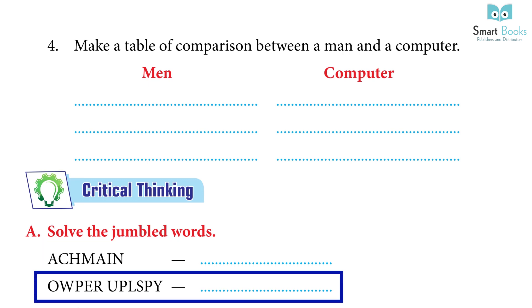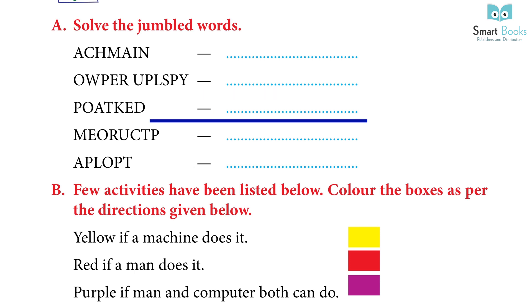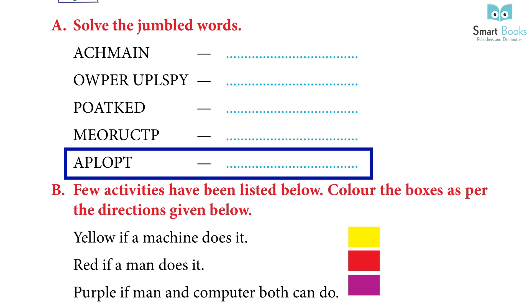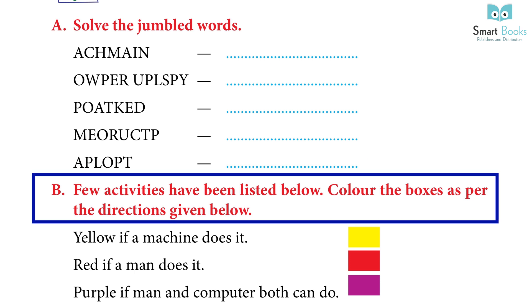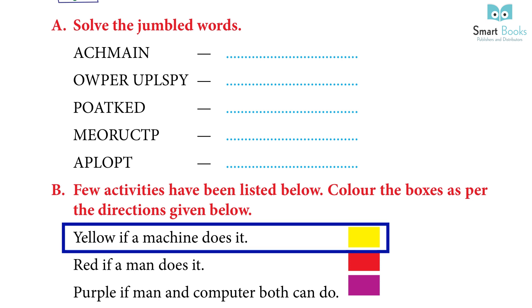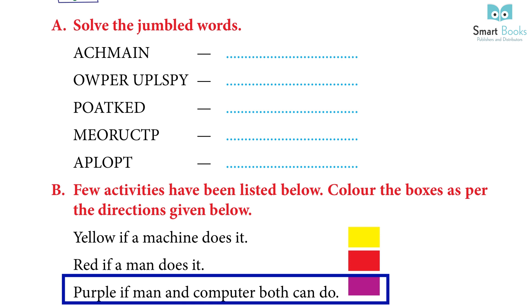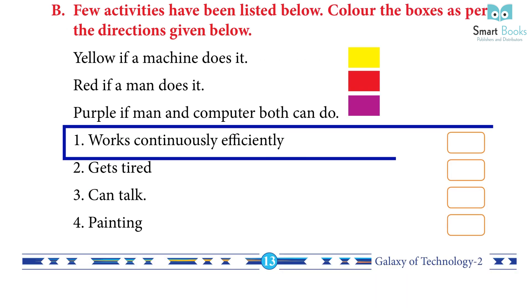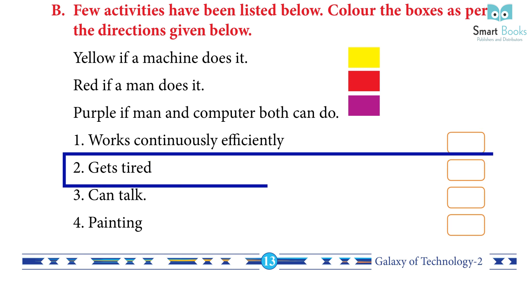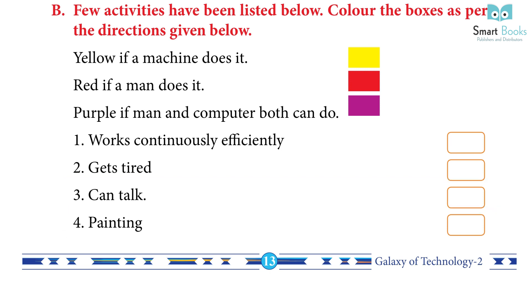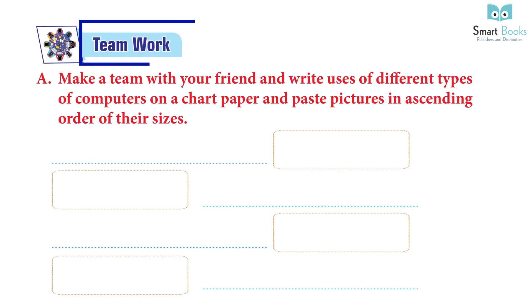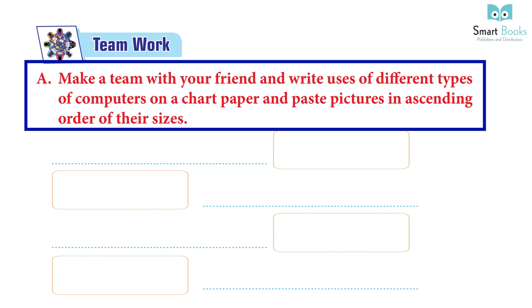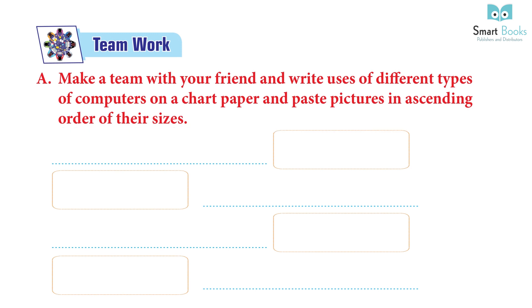Critical thinking — Activity A: solve the troubled word: 1) machine, 2) power supply, 3) desktop, 4) computer, 5) laptop. Activity B: color the boxes — yellow if a machine does it, red if a man does it, purple if both can do it — for activities: works continuously/efficiently, gets tired, can talk, painting. Teamwork Activity A: make a team with a friend and write uses of different types of computer on a chart paper and paste pictures in ascending order of their sizes.